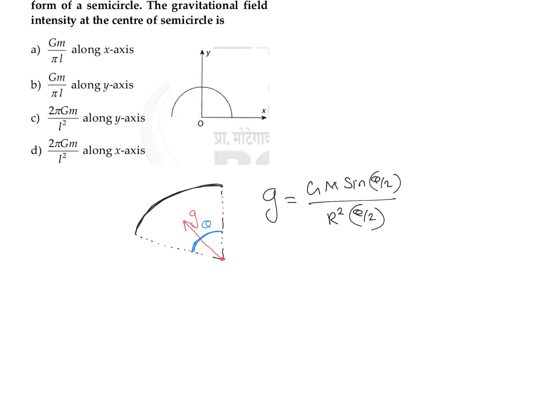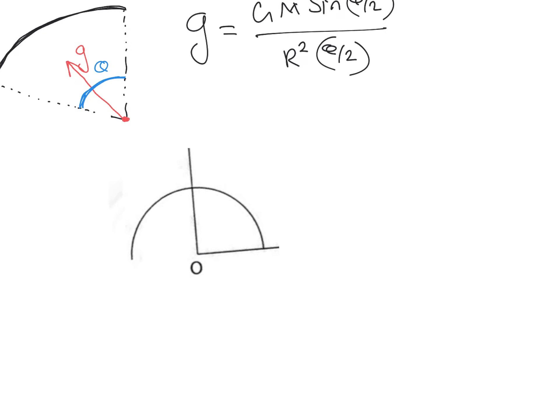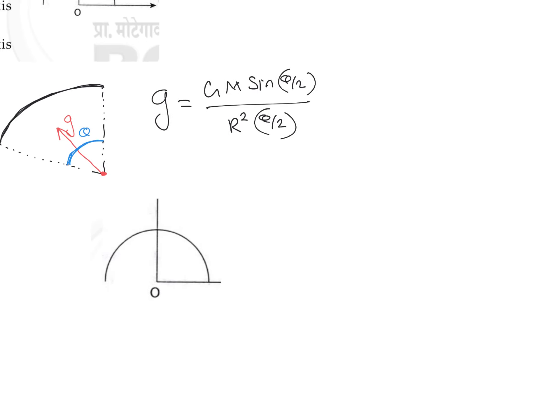In this question we have a semicircular arc. The difference is the value of theta — for this entire arc, theta is equal to pi or 180 degrees. From this we can find the gravitational field. You need to use the equation with theta equal to pi radians, not 180 degrees.